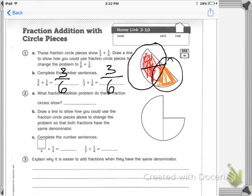So, two-once, what fraction addition problem do these fractions show? So, think about what the whole is split into first, and then what that is split into. C sort of shows you, gives you a hint. Three says, explain why it is easier to add fractions when they have the same denominator.